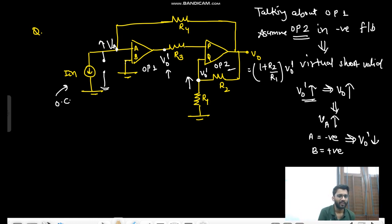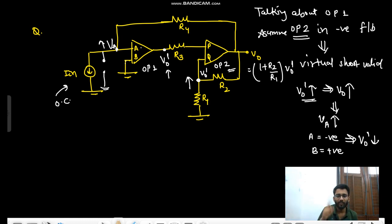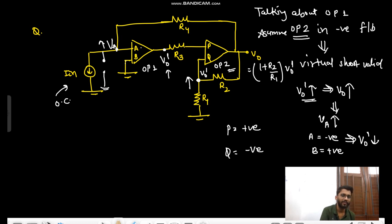For op-amp 2: V0 goes up, this node goes up. Since A is negative and B is positive from our previous result, if A is negative, this node goes down, and this potential at P also goes down. You want V0 to go down, so make P positive and Q negative. If positive terminal goes down, difference voltage goes down and output goes down. So P is positive and Q is negative.